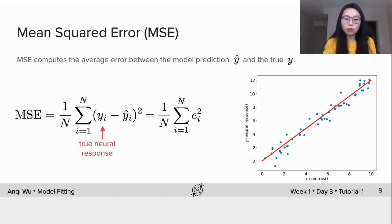and ŷ is the model prediction. N is the total number of data points. i is the index of data points from 1 to N.